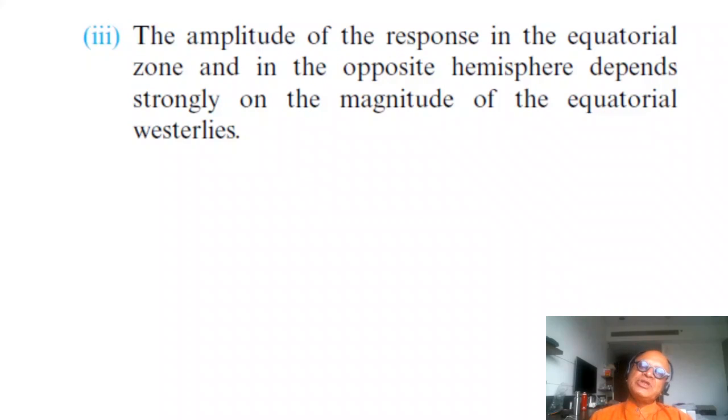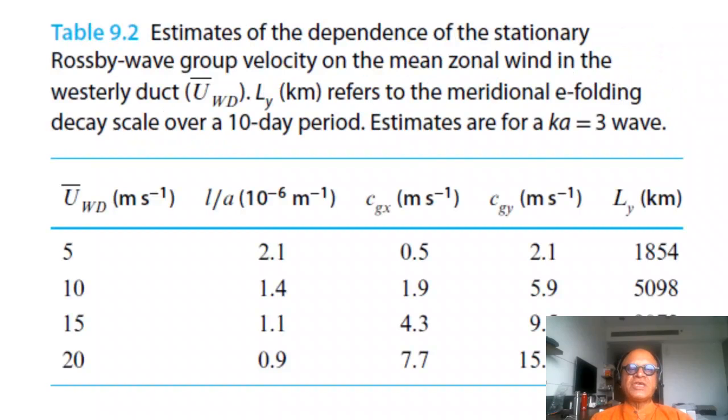Finally, amplitude of the response in the equatorial zone and in the opposite hemisphere depends strongly on the magnitude of the equatorial westerly. The weak westerly duct and the strong westerly duct had a very different extent of the penetration of the signal from one hemisphere into the other hemisphere.